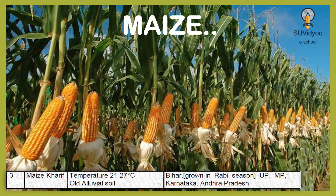Maize is a Kharif crop. It requires 21–27 degrees Celsius while growing. It grows well on old alluvial soil. In Bihar, it is grown as a Rabi season crop. It also grows in UP, MP, Karnataka and Andhra Pradesh.